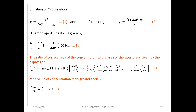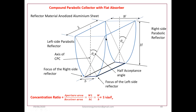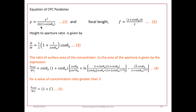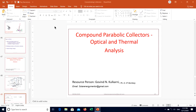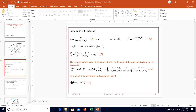Now the equation of the CPC parabola: if we want to generate the equation of this parabola, it is y equal to x squared divided by 2b(1 + sin θ_i), where b is the width of the absorber. If we just plot this, I will show you how this can be plotted using the plot values.